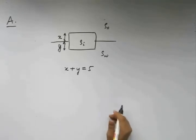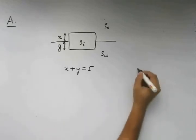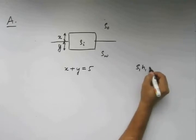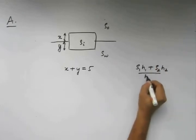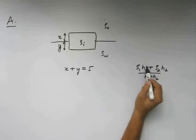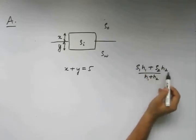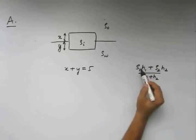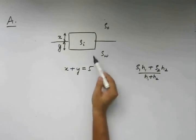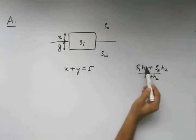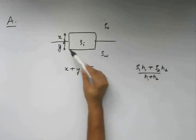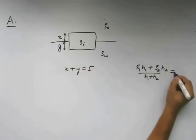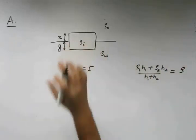Earlier from our discussion we had initially found out this formula, where h1 was the part of the body immersed in fluid rho1 and h2 was the height or the part of the body immersed in rho2. Here, rho 1 is rho o, rho 2 is rho w. So h1 is going to become x and h2 is going to become y. This was found to be equal to the rho of the body which was submerged.